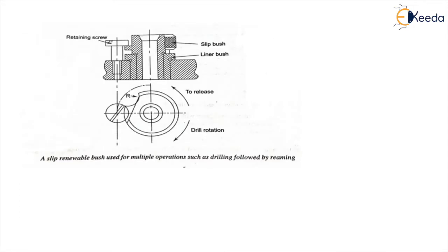There are also renewable bushes or slip renewable bushes used for multiple operations, such as drilling followed by a reaming operation. This is the renewable type of bush — this is the retaining screw, this is the slip bush, and this is the liner bush.